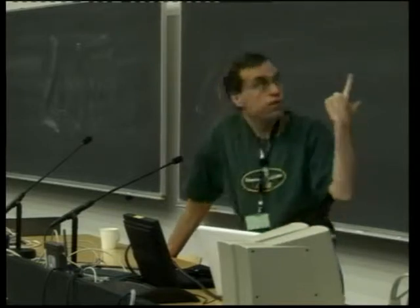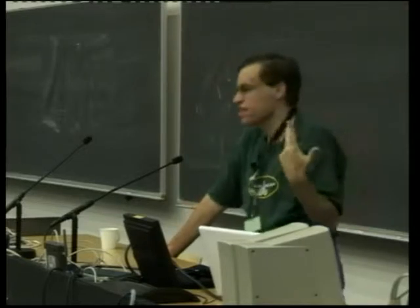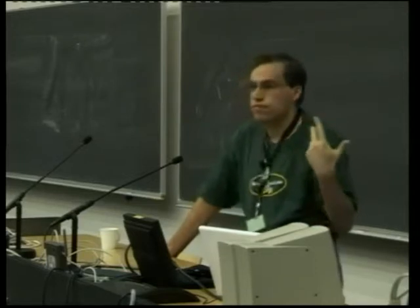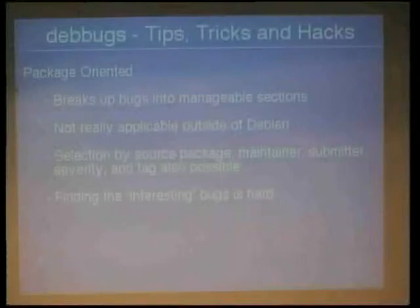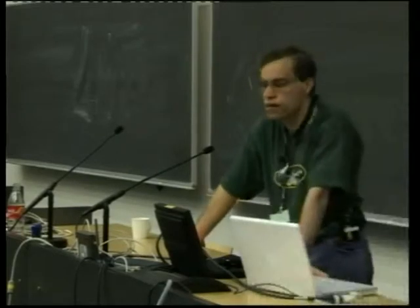Debbugs works really well for Debian because for most packages there's a reasonable number of bugs per package, divided relatively equally. Everyone should be familiar with the different ways of sorting bugs: by submitter, by source package, by maintainer, and in theory also by severity and tag. Sorting by tag does work, but there are lots of bugs with any particular tag, so it won't work well for all bugs with patches since there are just too many. Finding and collating interesting bug reports is really the key problem in the bug tracking system world.